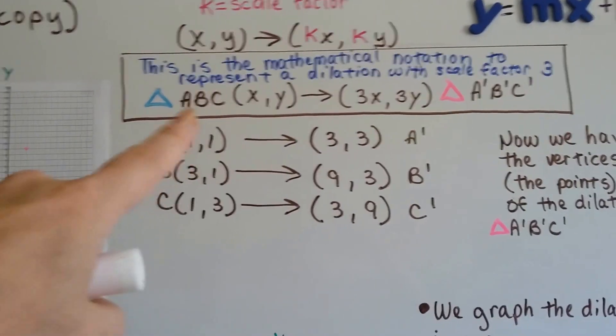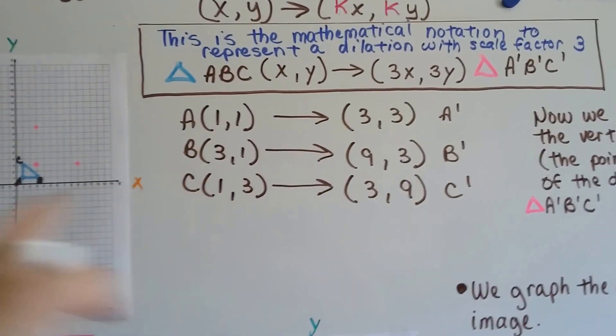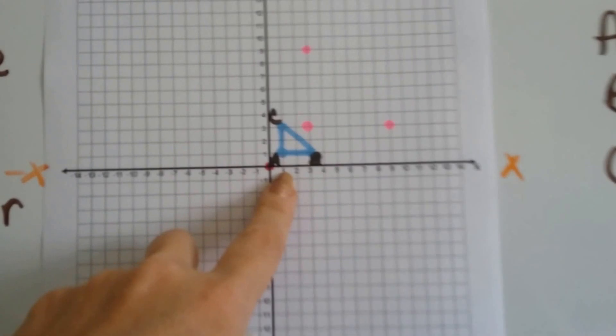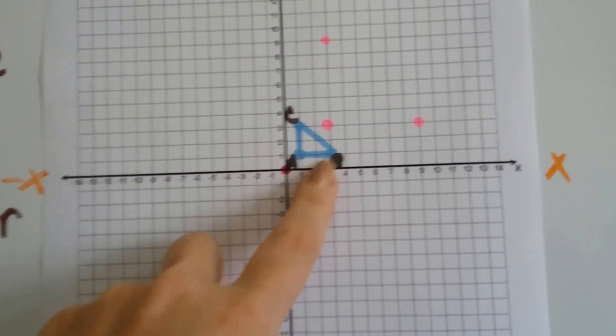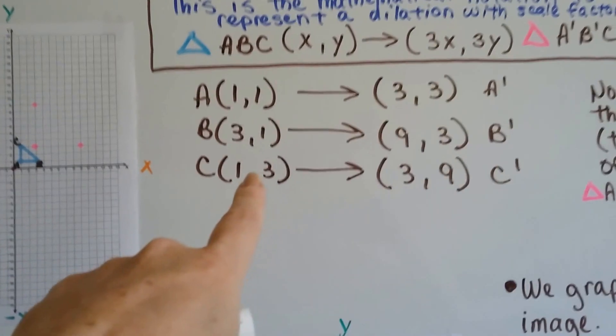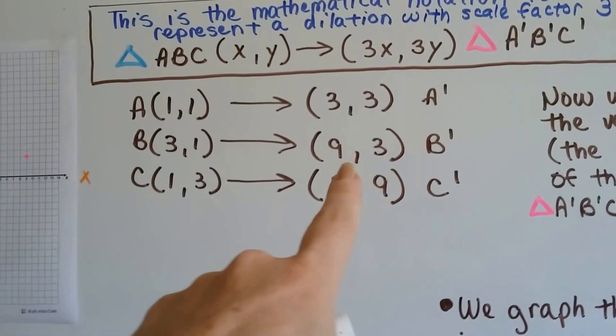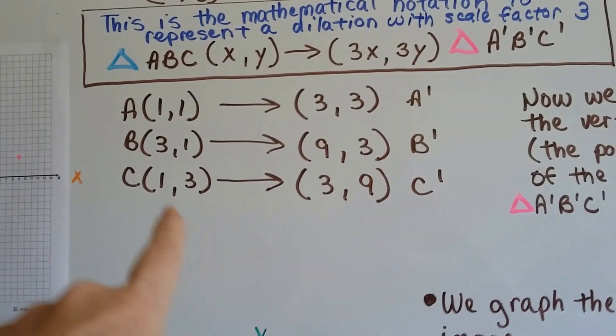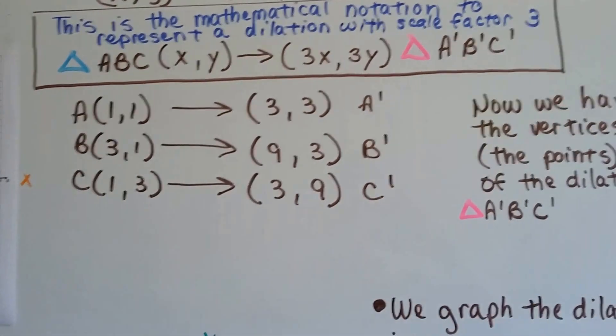We're going to multiply all of the blue triangle's values by 3, just like we did in the last video. Because A is at (1,1), B is at (3,1), and C is at (1,3), we have our coordinates for the original, the preimage, and we multiply them by 3. So (1,1) becomes (3,3), (3,1) becomes (9,3), and (1,3) becomes (3,9). They've all been multiplied by 3, because that's the scale factor.